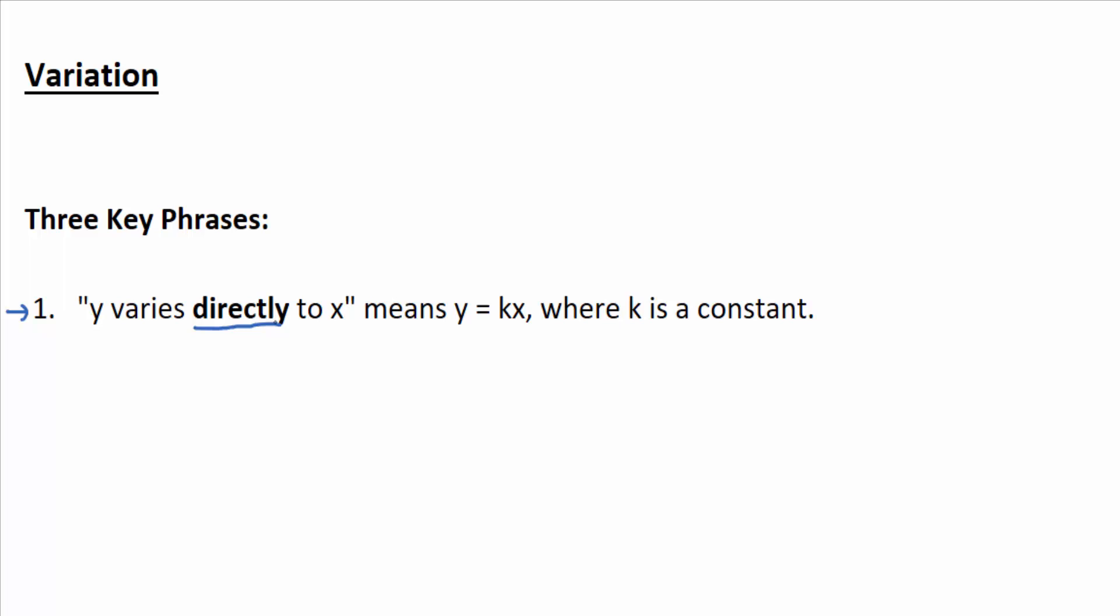But if you see, it doesn't have to be y and x, it could be whatever variables you're using, but we'll use y and x here. If y varies directly as x, then that translates from words to symbols, that translates to y equals k times x, where k is some constant.